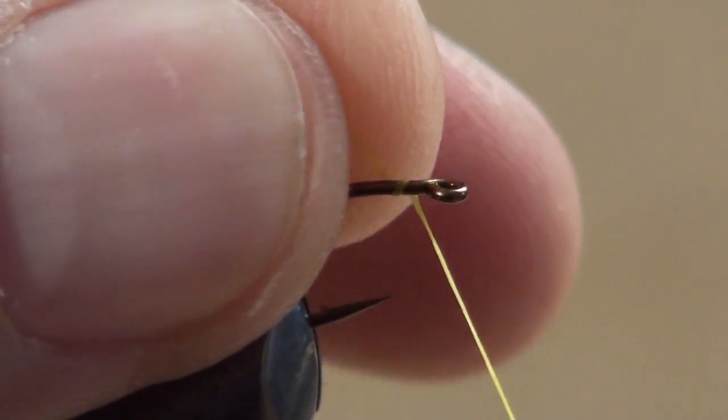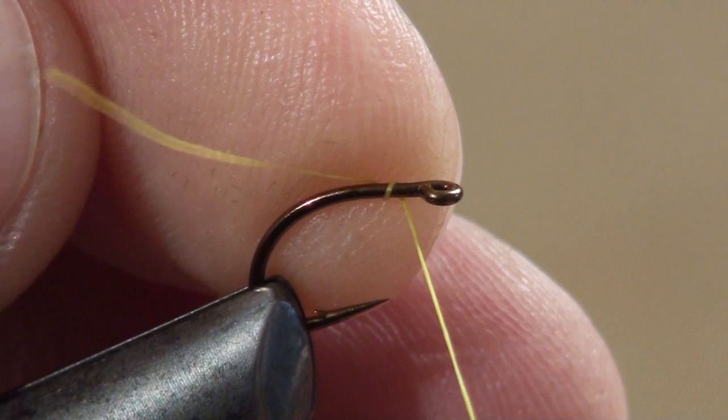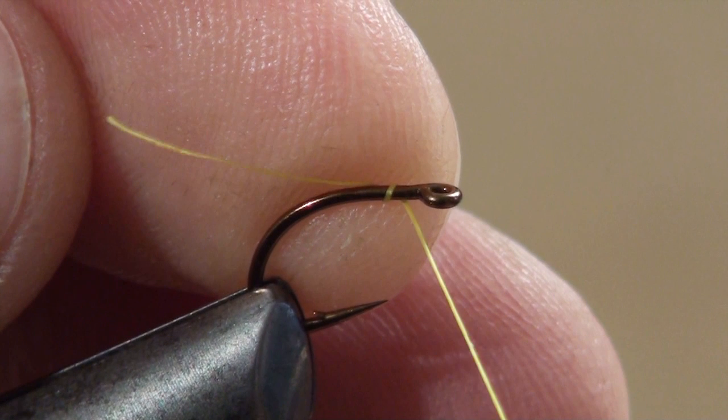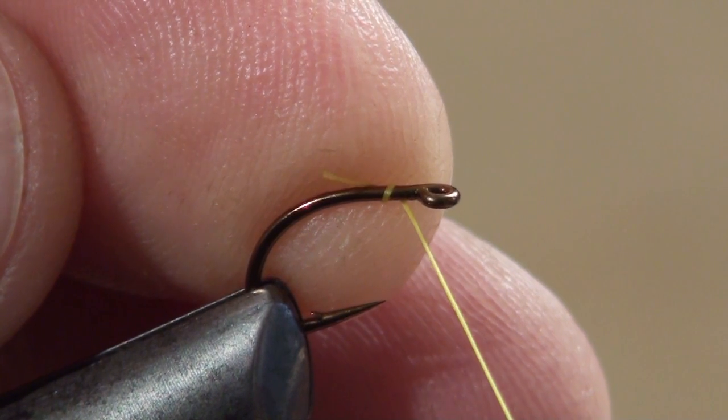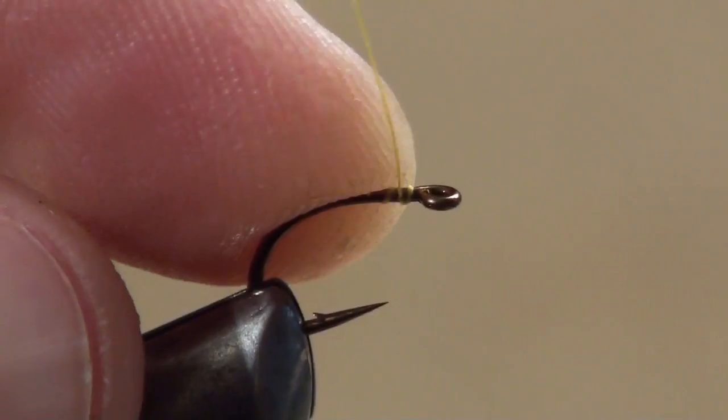Pulling down on the bobbin, rotate your index finger to the back side of the hook. With your index finger, keep the wrap of thread pinned against the hook shank. Slowly pull your bobbin down while you monitor the length of the tag. Begin to wrap over the tag.